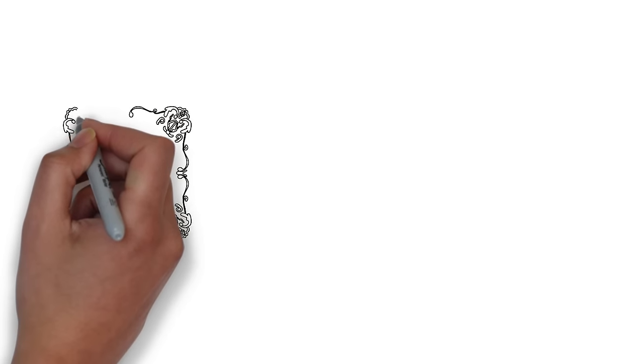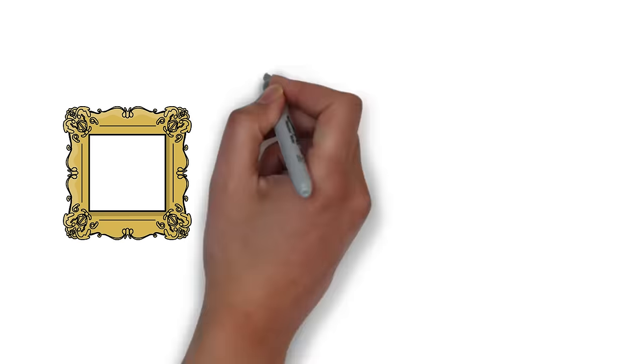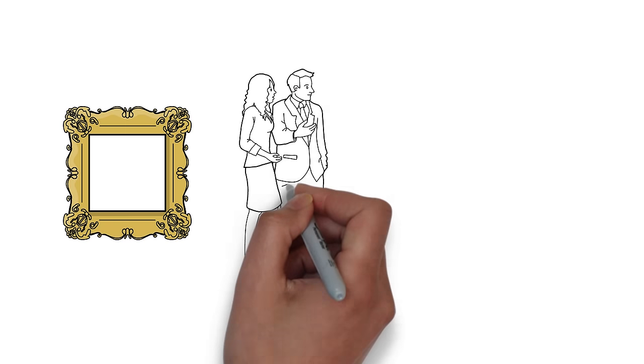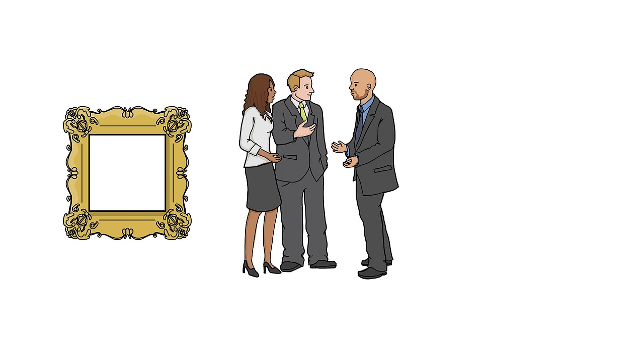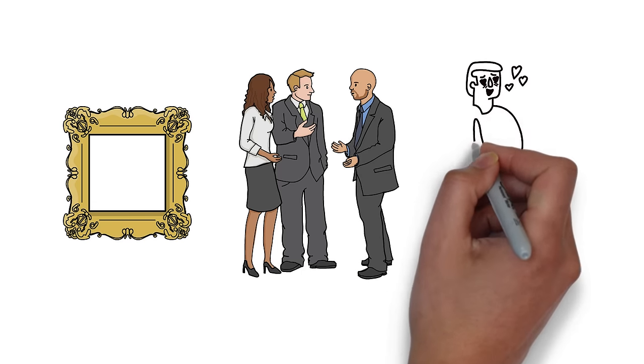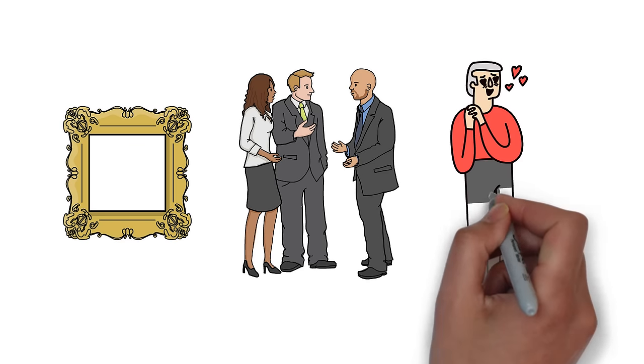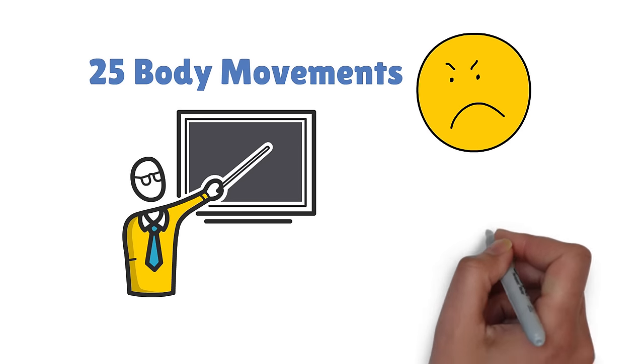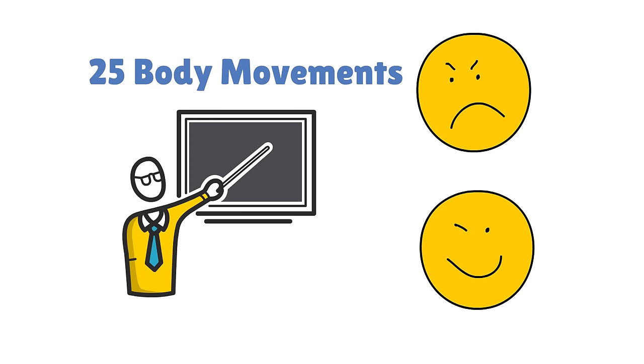It's been said that a picture is worth more than a thousand words, and the same can be said with gestures. Through our actions and gestures, we are unintentionally giving away signals about our genuine feelings. Here are 25 body movements that will reveal how a person is really feeling.